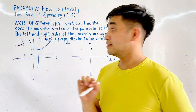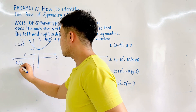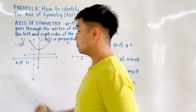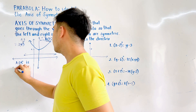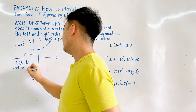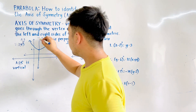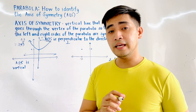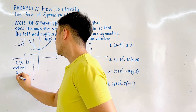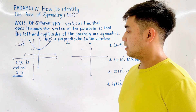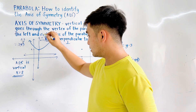What is the axis of symmetry? It is vertical. And what is the equation of the axis of symmetry? It is a line. Therefore, if it is vertical, the equation must be x = 2. That is the AOS, or the axis of symmetry. Since this is vertical, we will be using x.